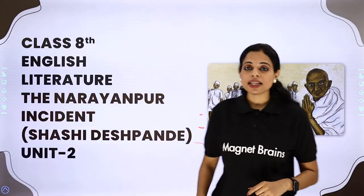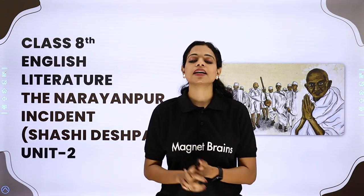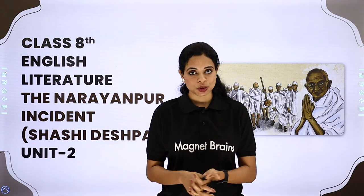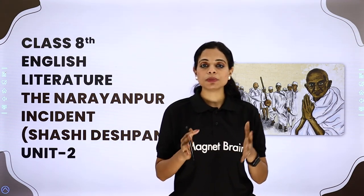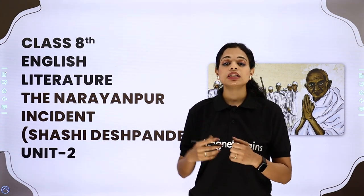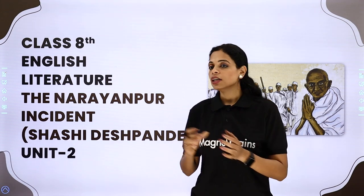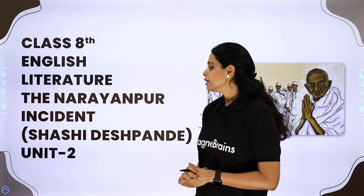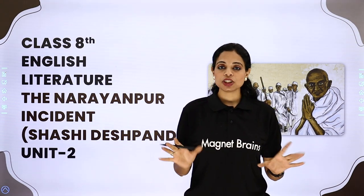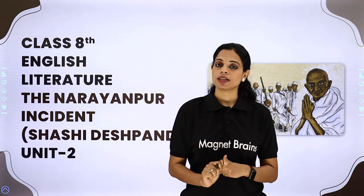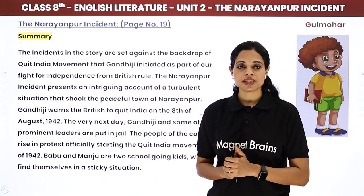On this note we are going to start and continue with the 8th standard ki Gulmohar book. Jis mein ham ne dekha yaha pe second chapter, second unit. The name of the chapter is 'The Narayanpur Incident' which is based on the Quit India movement — jho hamara freedom struggle tha, jis mein Gandhi ji ne 'Angrezo Bharat Chhodo' ye andolan start kiya tha. Is pe ek chhota sa incident hai jho ki ham ne is chapter mein padha tha, and this has been written by Sashi Deshpande. Ab hum is ki summary lenge, followed by question answers, so that the entire chapter will be recapitulated.